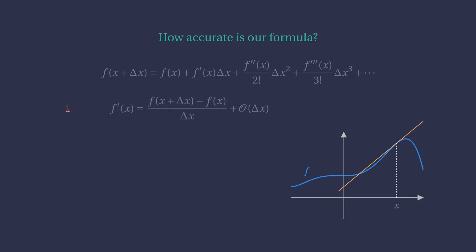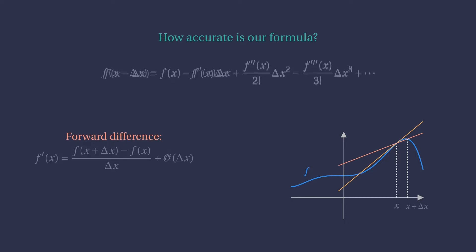This formula is the so-called forward difference, but we have more options. Consider again the Taylor expansion of f at x, but now compute the value of f at x minus delta x. We now find a different formula for the derivative. This is the so-called backward difference formula. Unfortunately, it is also only first-order accurate.